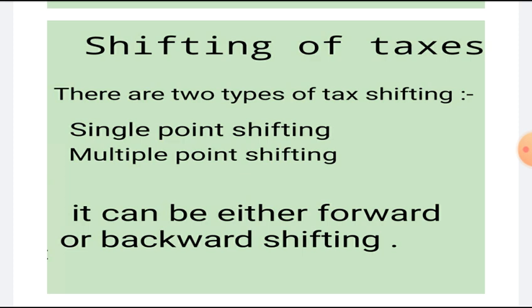So there are two types of tax shifting: single point shifting and multiple point shifting. Single point shifting is when the shifting passes through just one point, for example shifting from producer on to the consumer. And in multiple point shifting, the shifting passes through many points, for example from producer to the wholesaler, wholesaler to the retailer, and retailer to the final consumer. This type of shifting we call multiple point shifting.